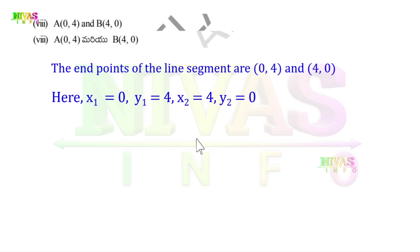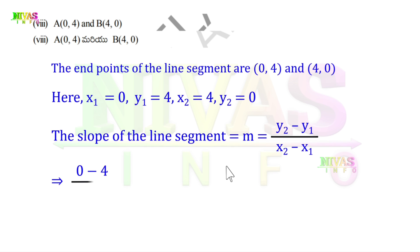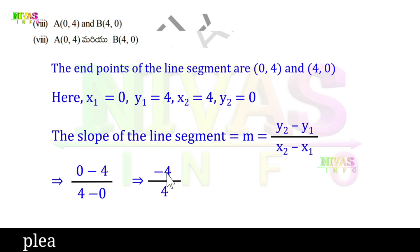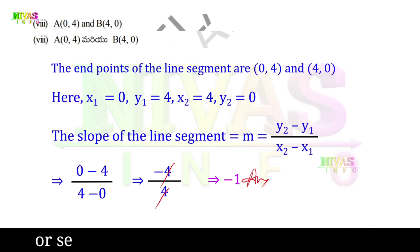Next one: endpoints are (0, 4) and (4, 0). So x1 = 0, y1 = 4, x2 = 4, y2 = 0. Using the slope formula M = (y2 - y1) / (x2 - x1): (0 - 4) / (4 - 0) = -4 / 4 = -1. So the slope of the line is -1. This is the answer.